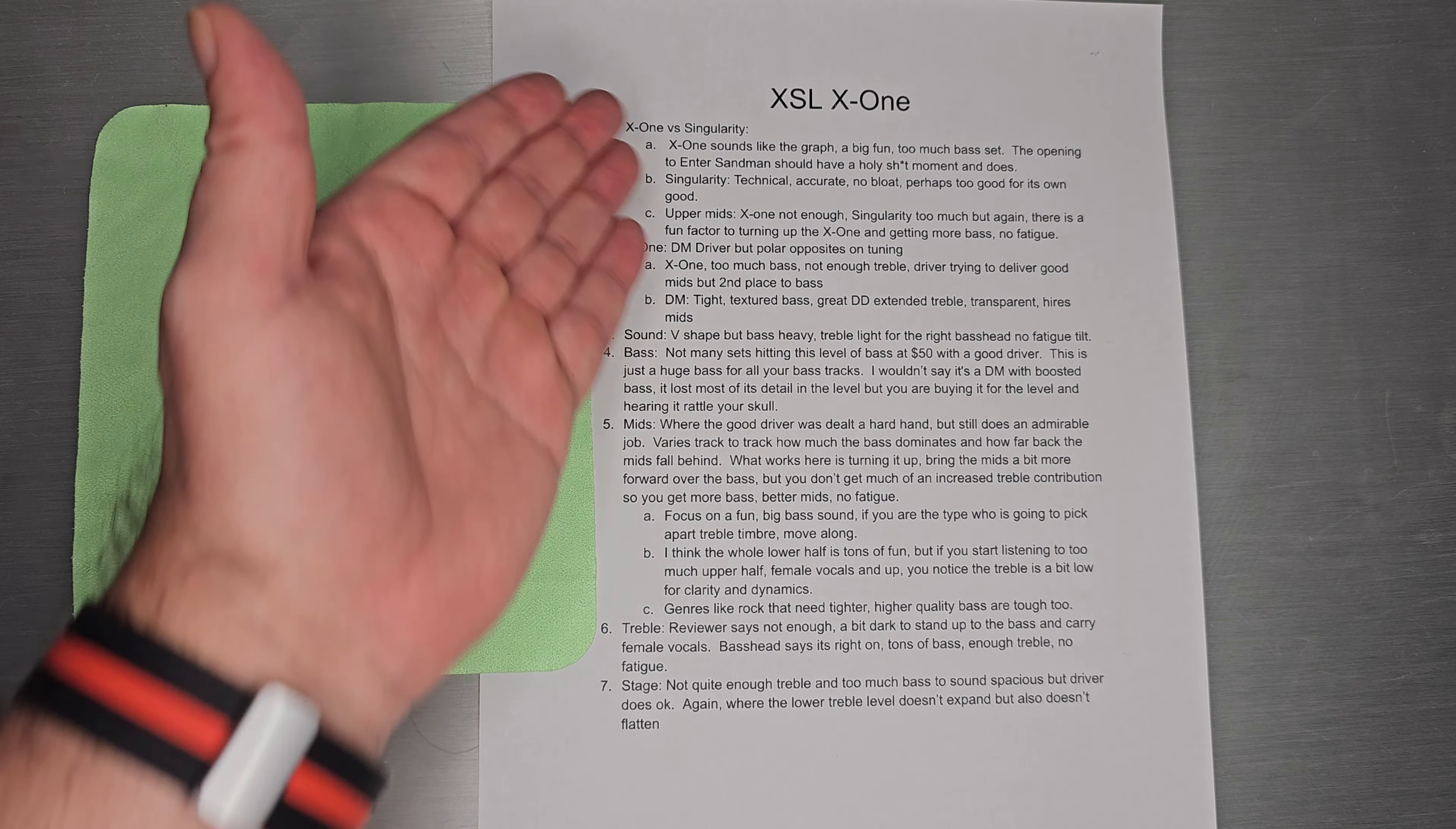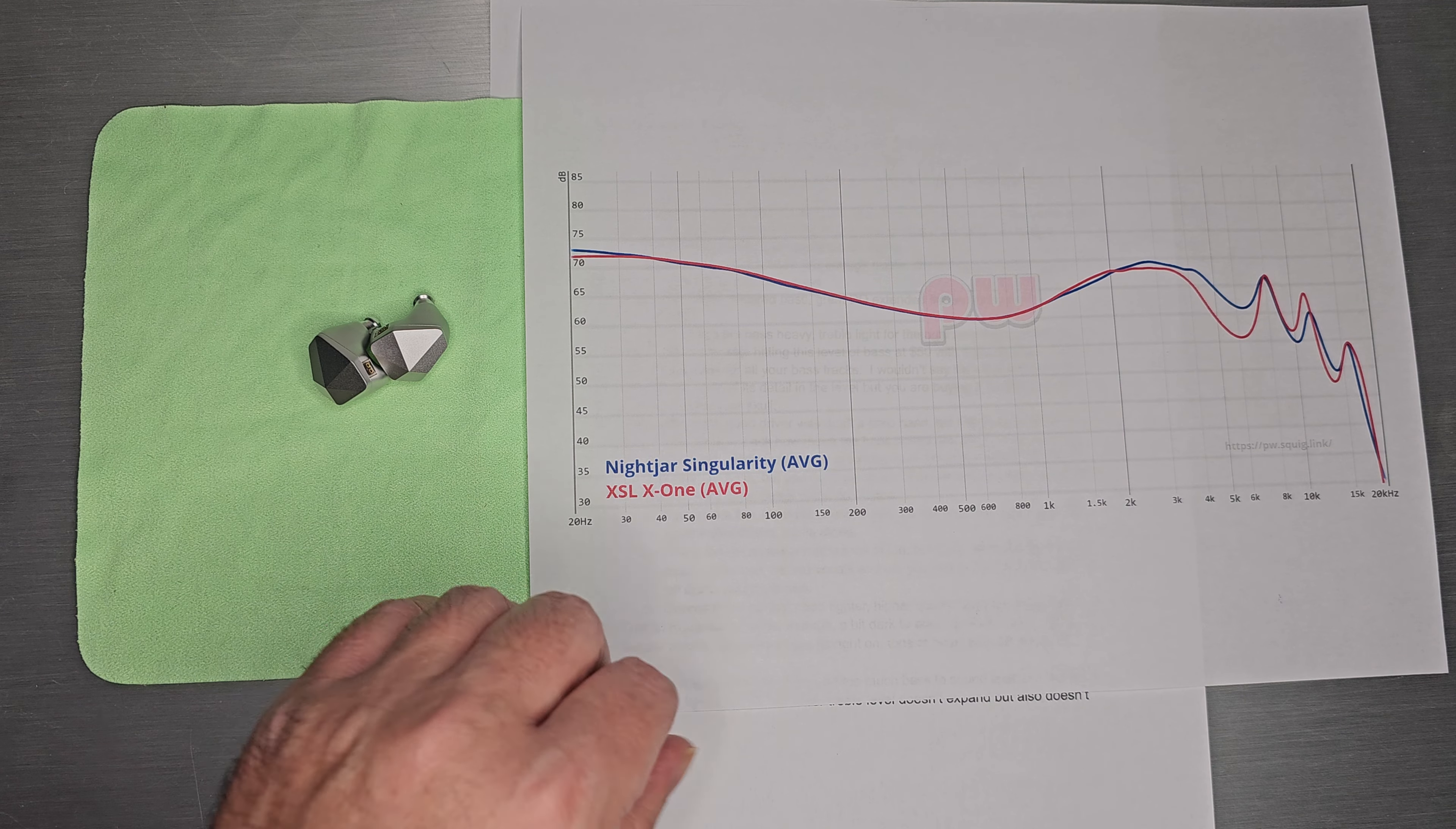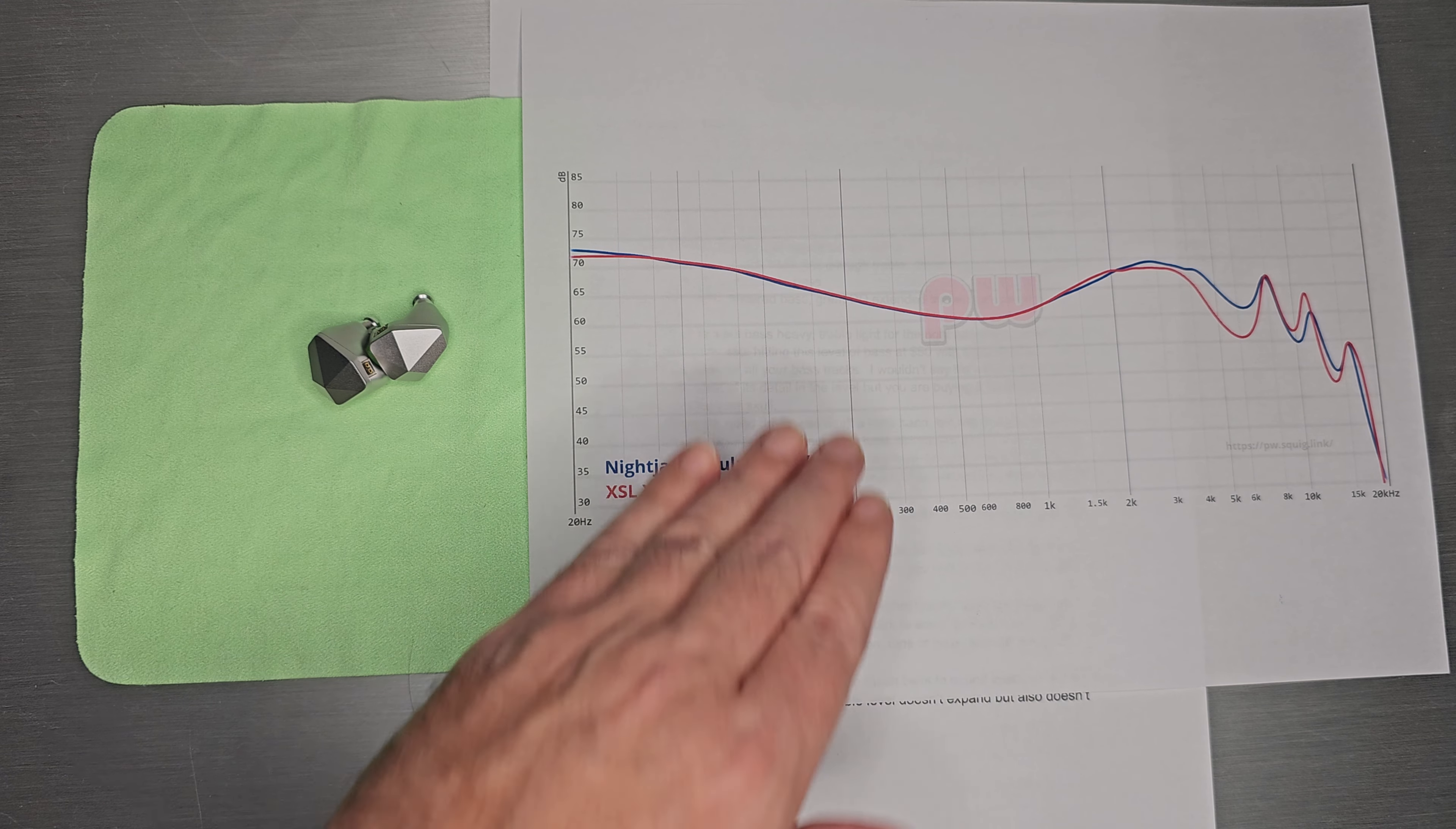The last set I just talked about was Singularity. Singularity had a ton of bass and it looked kind of like this. So why am I going to talk about both of them? Because they essentially have a very similar looking bass curve. Singularity, and I talked about this a lot, it looks really huge and you think it's really huge in the ear. It's not.